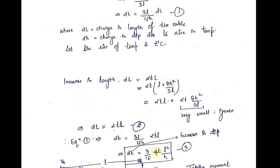We will be knowing the value of the coefficient of thermal expansion for the cable, the value of increase in temperature, the horizontal span between the supports, and the original dip of the cable. After putting all the values, I can get the value of increase in dip. This equation comes out to be positive, which indicates that whenever there is an increase in temperature, the dip will increase.